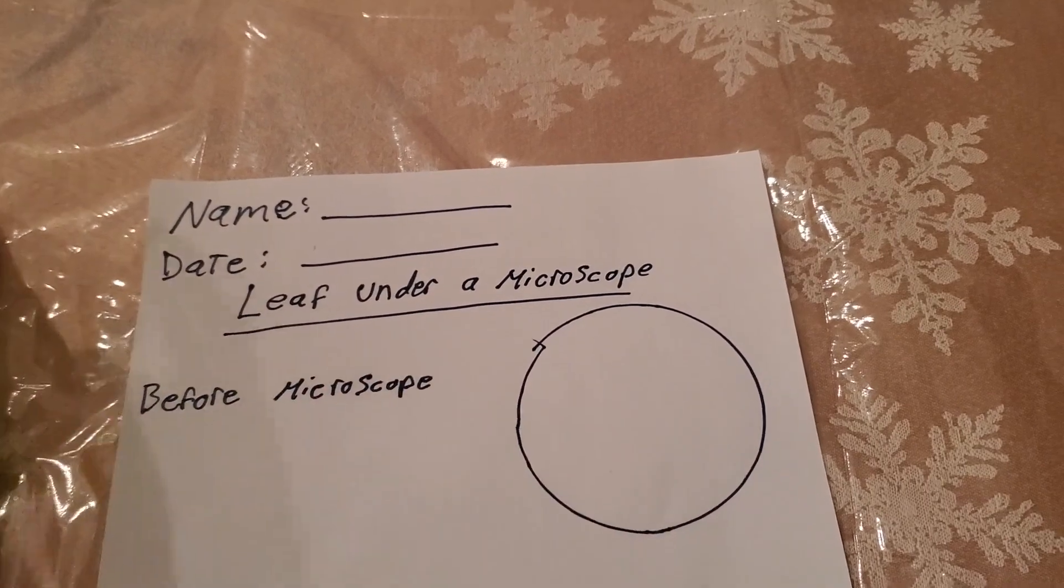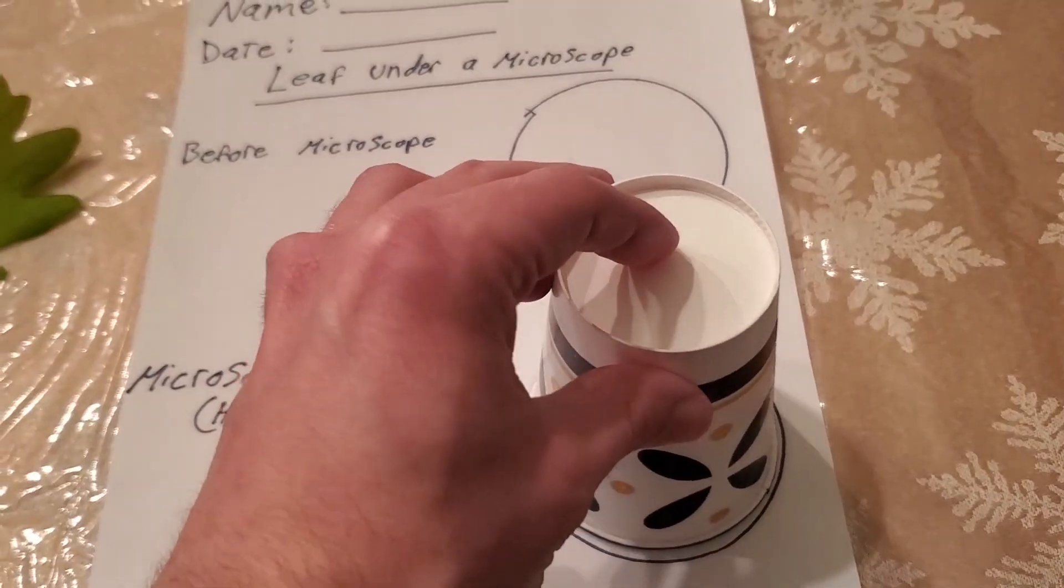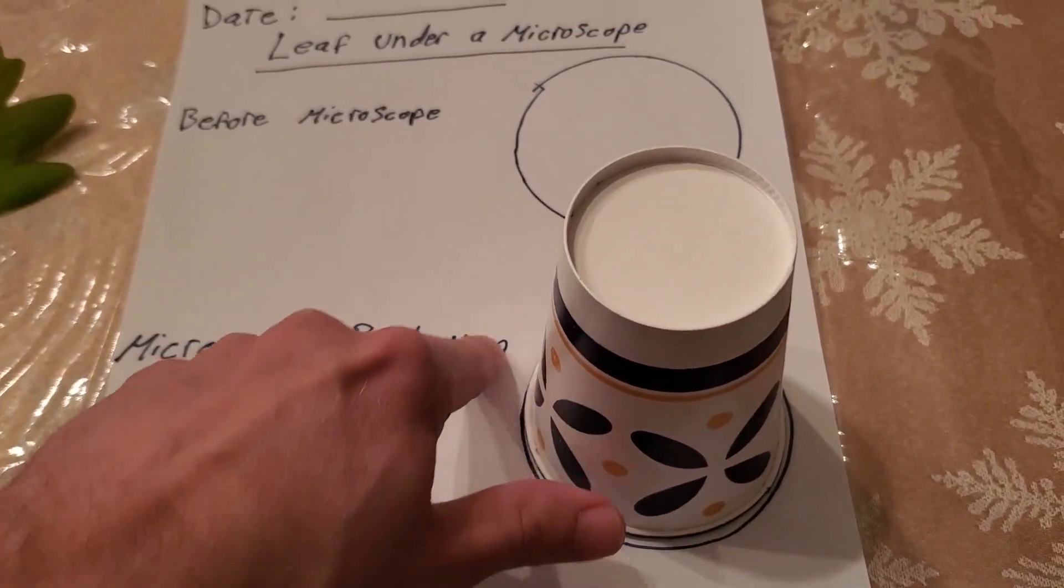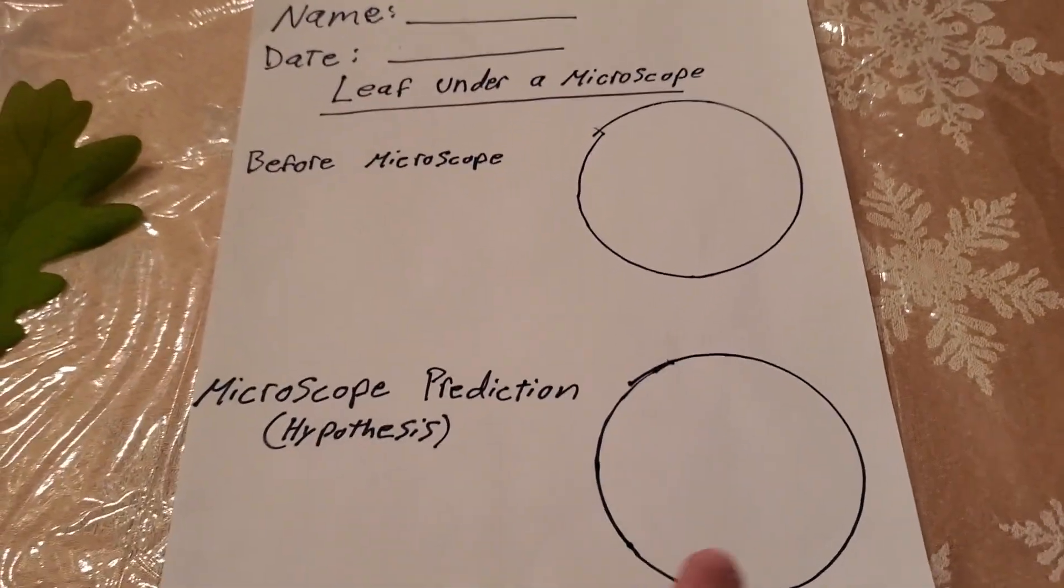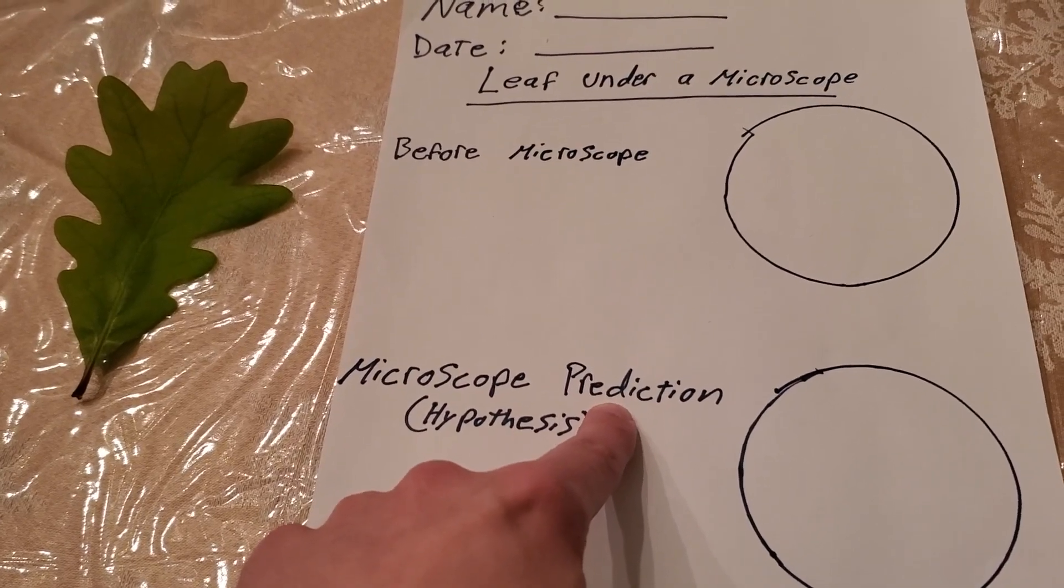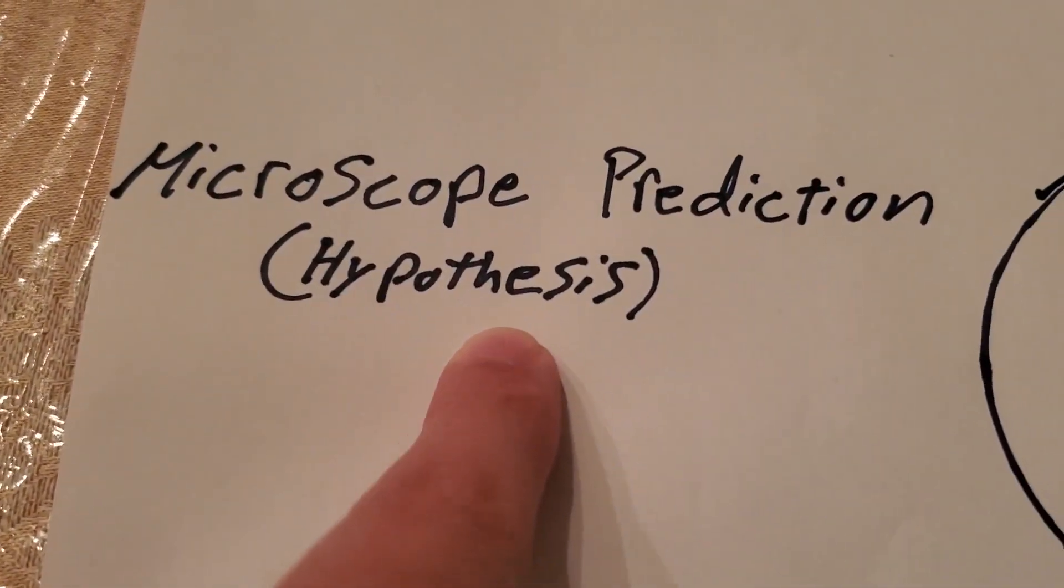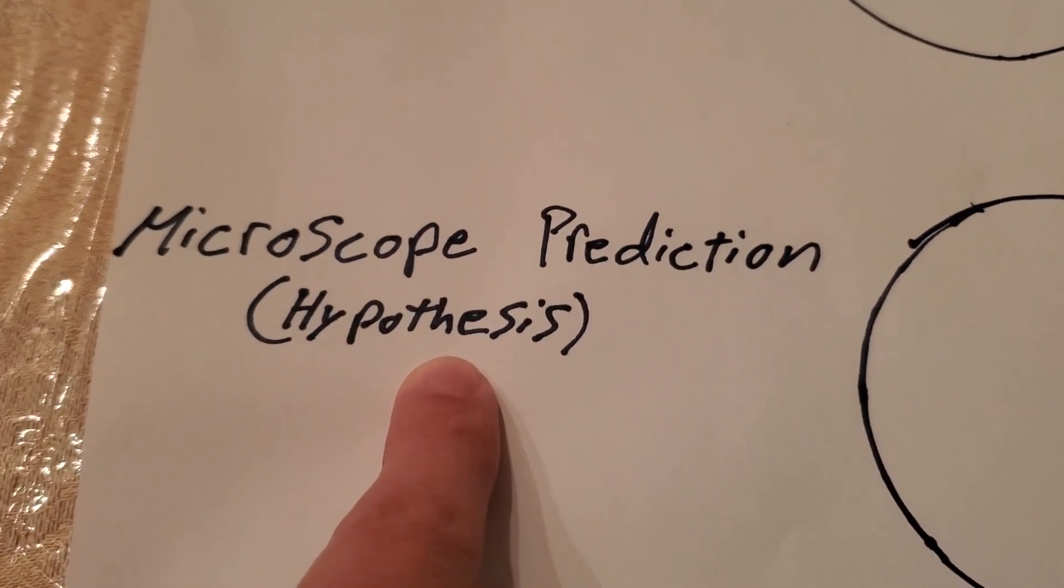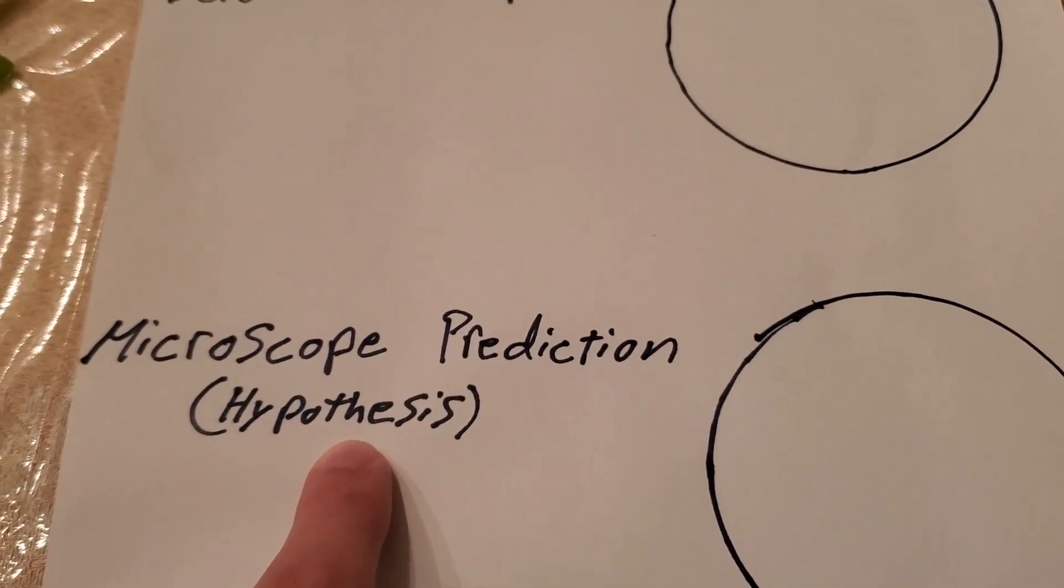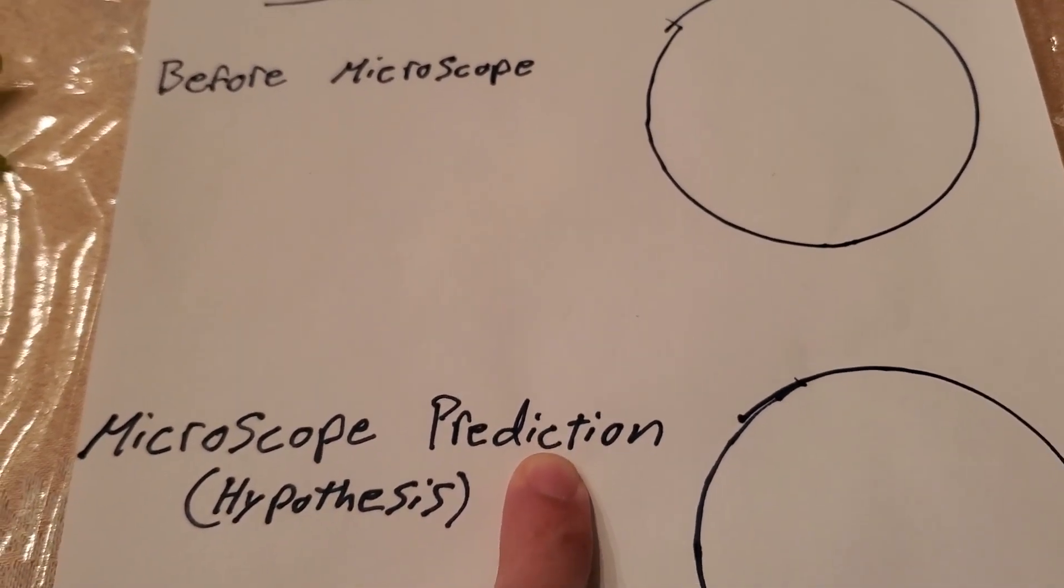And then next you're going to make another circle with this cup. Same way I did before. I just took a marker and I traced all the way around it. That's all. And then next to that you're going to write microscope prediction. And like I said before, it's a hypothesis. In science we call it a hypothesis. But I know it can be like a goofy sounding word. Maybe it's a little bit tough for you to spell. You can always copy it here. Or you can just write the word prediction. Either one is fine.